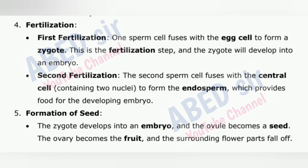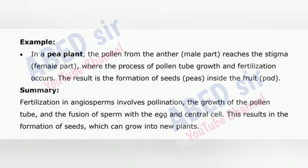5. Formation of seed — the zygote develops into an embryo, and the ovule becomes a seed. The ovary becomes the fruit, and the surrounding flower parts fall off. Example: in a pea plant, the pollen from the anther reaches the stigma where the process of pollen tube growth and fertilization occurs. The result is the formation of seeds, peas, inside the fruit, pod. Summary: fertilization in angiosperms involves pollination, the growth of the pollen tube, and the fusion of sperm with the egg and central cell, resulting in the formation of seeds.